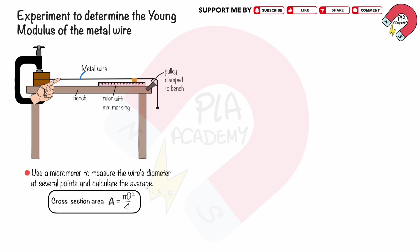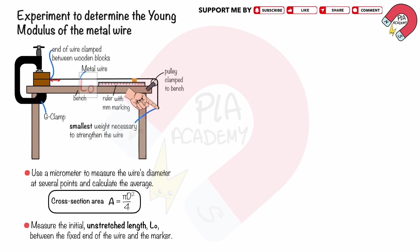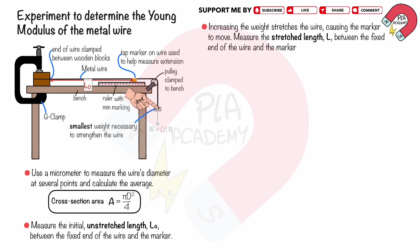Clamp the wire to the bench as shown in the diagram, allowing weights to be hung from one end. Start with the smallest weight necessary to straighten the wire — this weight should not be included in the final calculations. Measure the initial unstretched length L between the fixed end of the wire and the marker. Increasing the weight stretches the wire, causing the marker to move. Measure the stretched length L between the fixed end of the wire and the marker.